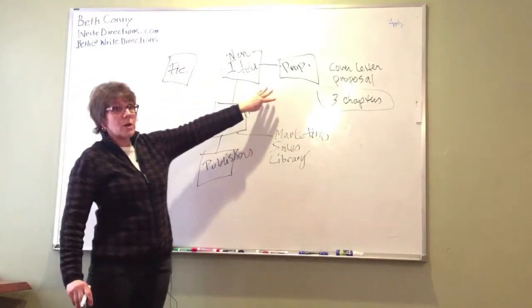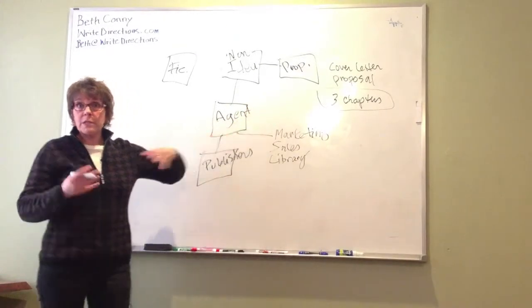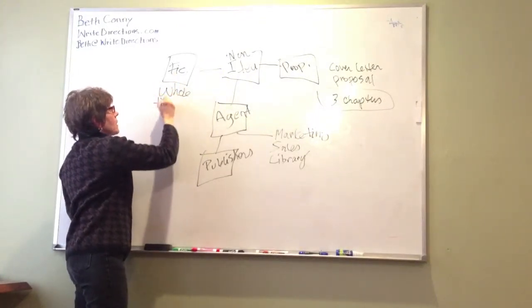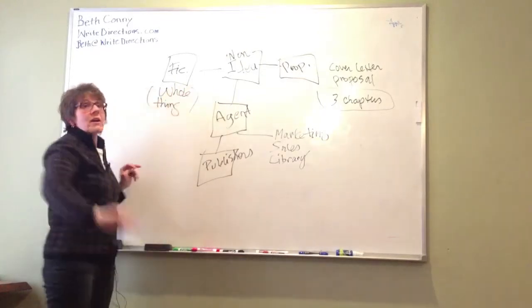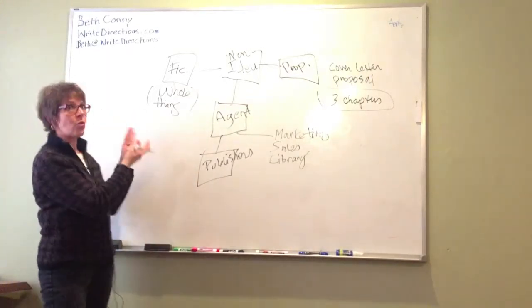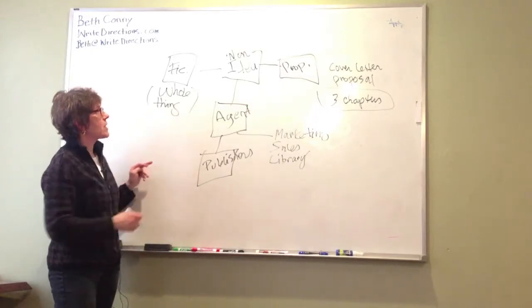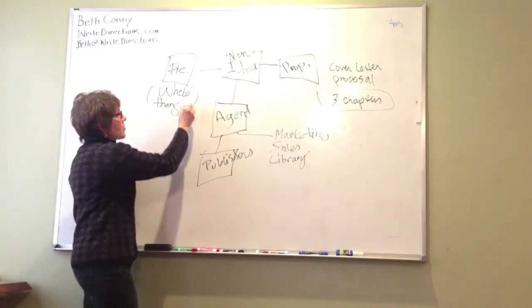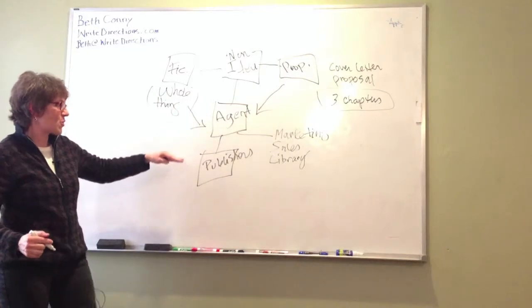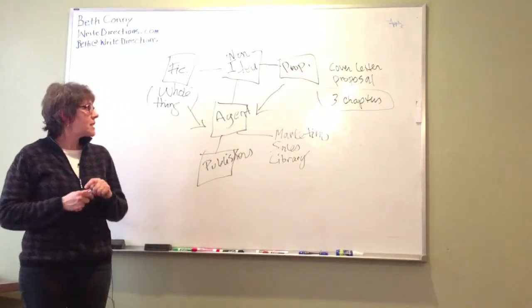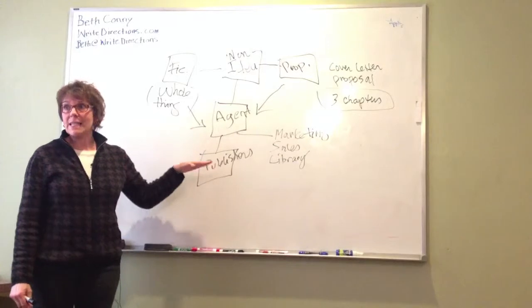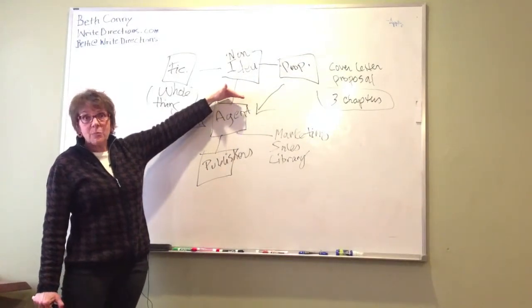Either way, the way the gatekeepers work is first you have an agent. And the agent, theoretically, is someone who can tell whether the book idea is good, and the agent knows different publishers and where to send that book. So here's gatekeeper number one. You first have to get past the agent. Agents aren't licensed in any way. Anybody can these days. And these guys are really hurting, too, because of self-publishing. People are circumventing them as well.